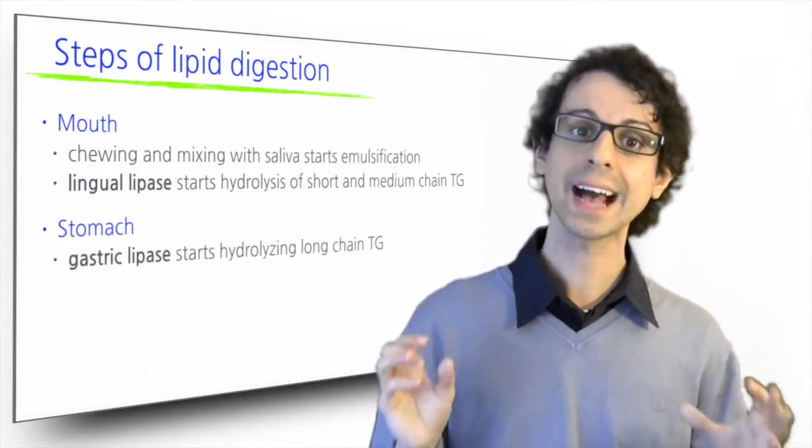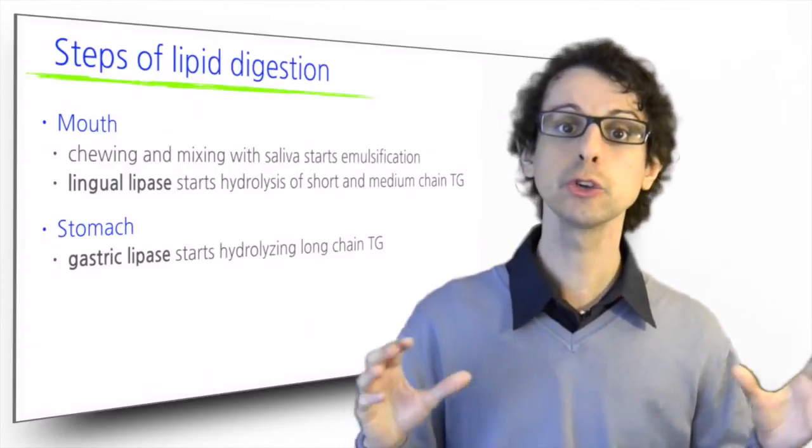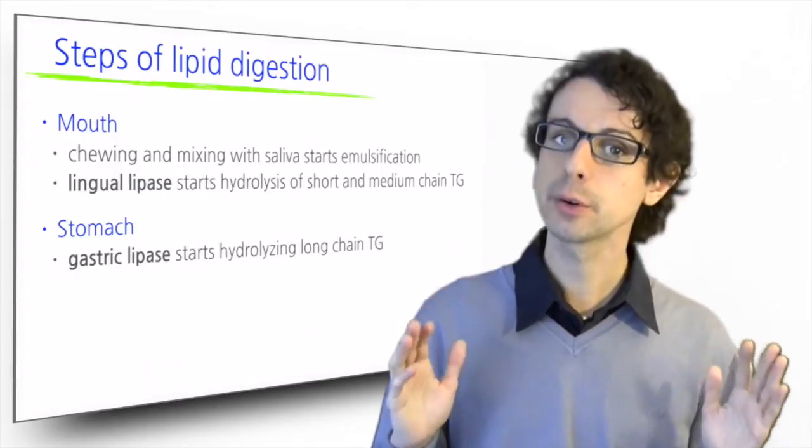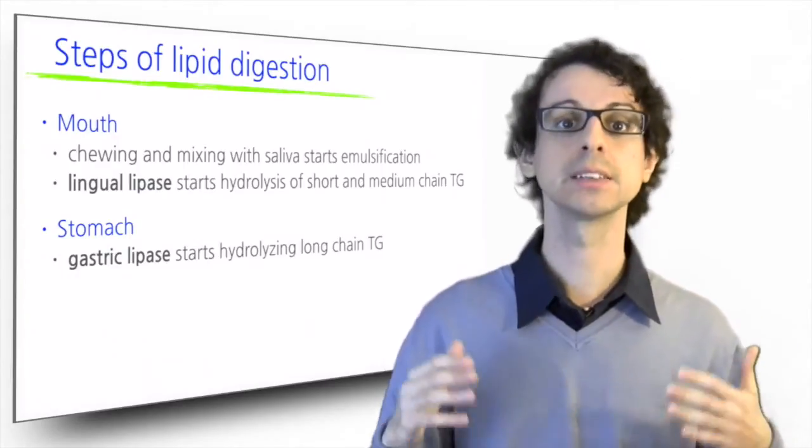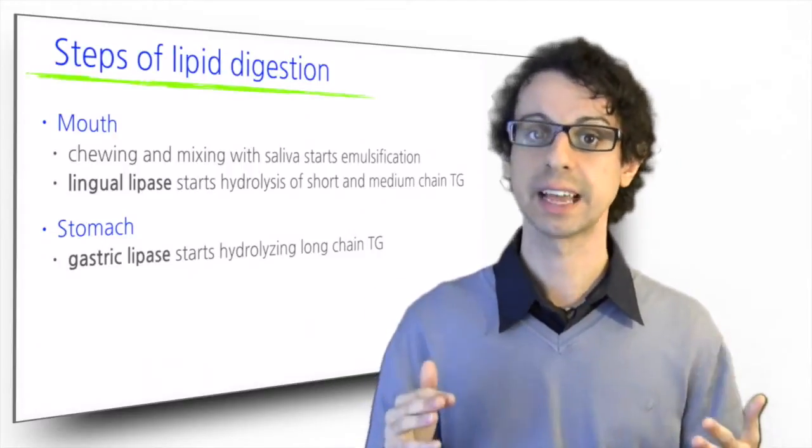In the stomach, gastric lipase starts working on long chain triglycerides, usually by removing just one fatty acid from glycerol. About 30% of fat is digested here. It's a sort of pre-processing. The real deal happens in the intestine.